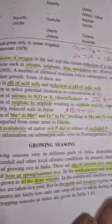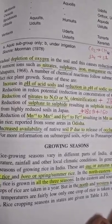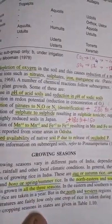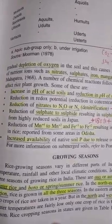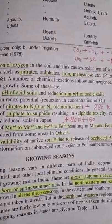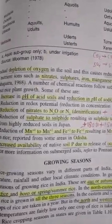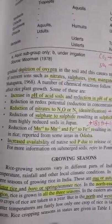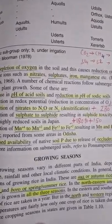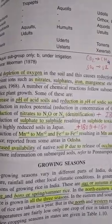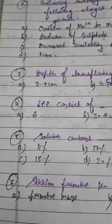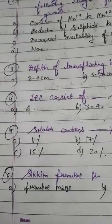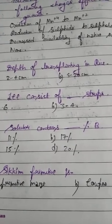So the correct answer is none (option D). Please also remember some important changes during submergence: submergence increases pH of acid soil and reduces pH of alkaline soil; reduction in redox potential and oxygen concentration; reduction of nitrate to N2O or N2 (denitrification); reduction of sulfate to sulfide causing sulfide toxicity called Akoichi disease; reduction of Mn4+ to Mn2+ and Fe3+ to Fe2+ causing toxicity reported from Odisha; and increase in availability of native soil phosphorus due to release of occluded phosphorus.